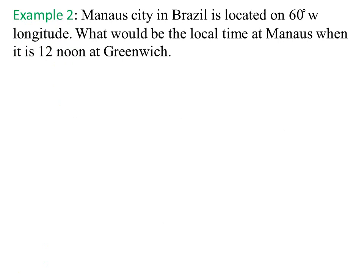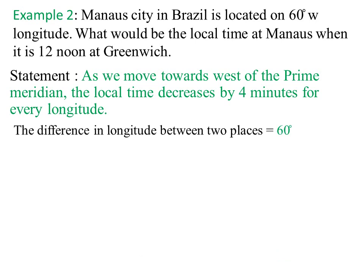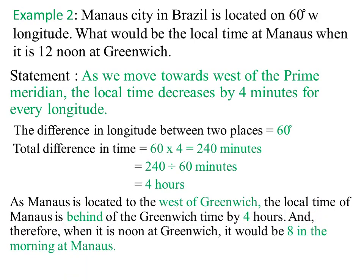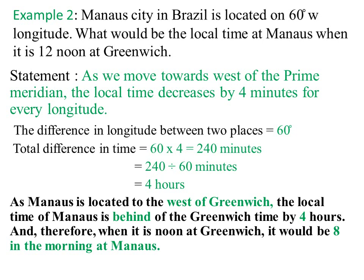Example 2: Manos, a city in Brazil, is located on 60 degree west longitude. What would be the local time at Manos when it is 12 noon at Greenwich? As we move towards the west of the prime meridian, the local time decreases by 4 minutes for every degree. The difference in longitude is 60 degrees, so the total time difference = 60 × 4 = 240 minutes = 4 hours. Since Manos is to the west of Greenwich, it is behind by 4 hours, so when it is noon at Greenwich, it would be 8 in the morning at Manos.